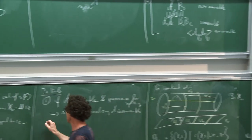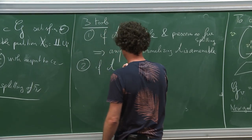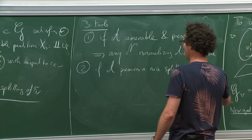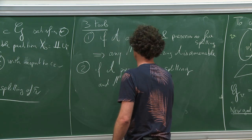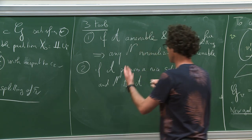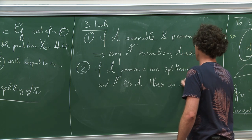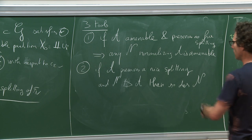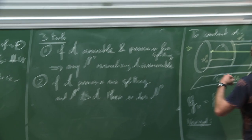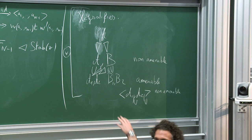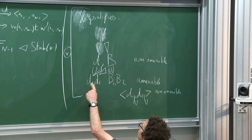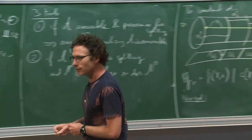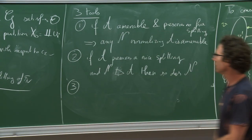The second tool: if A preserves a nice splitting and N normalizes A, then so does N — preserving a nice splitting is stable under taking normalizers. If for some reason you know that this guy preserves a splitting, then since it goes through the normalizer, H also preserves the splitting. Nice splitting refers to cyclic splittings and some other kinds.